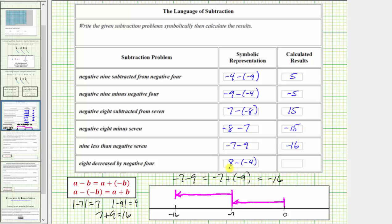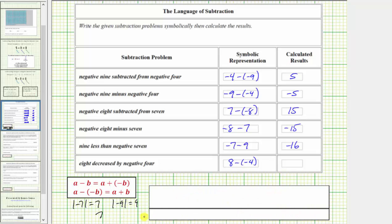For the last example, we have 8 minus negative 4. Subtracting a negative is equivalent to adding a positive, which means 8 minus negative 4 is equal to 8 plus positive 4, which equals positive 12. I hope you found this helpful.